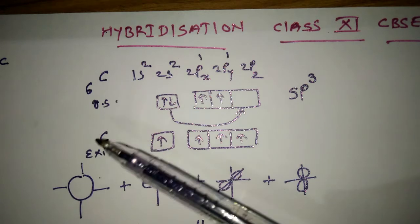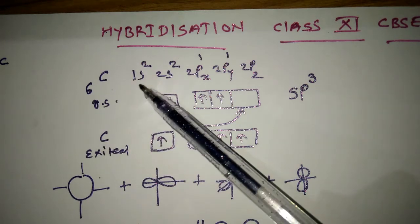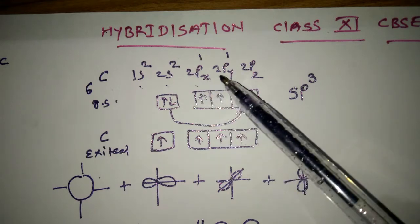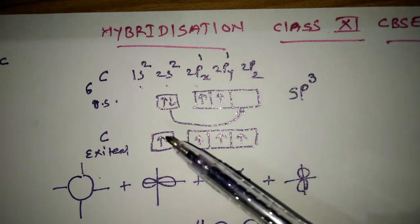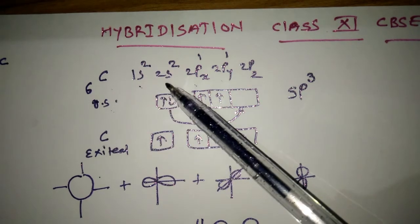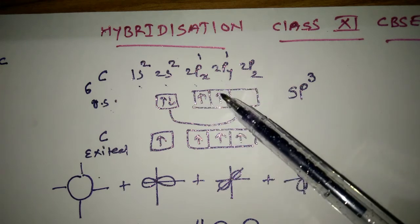sp3 hybridization. First of all, tetravalency of carbon: 1s2, 2s2, 2px1, 2py1, 2pz0. Electronic configuration of carbon in ground state: 2s2, that is two electrons, 2px1, 2py1.